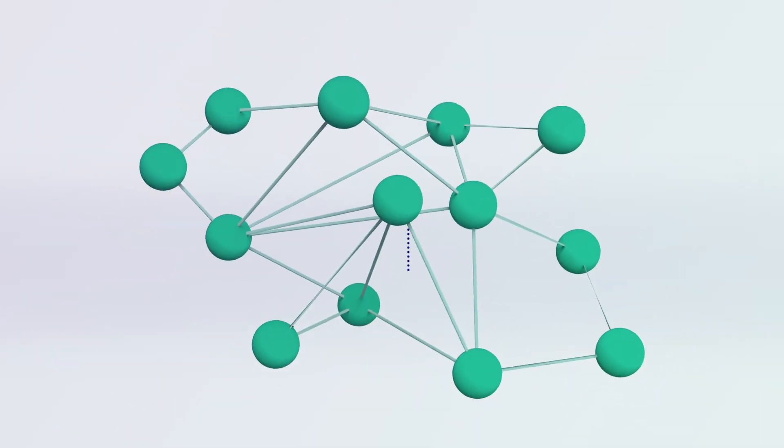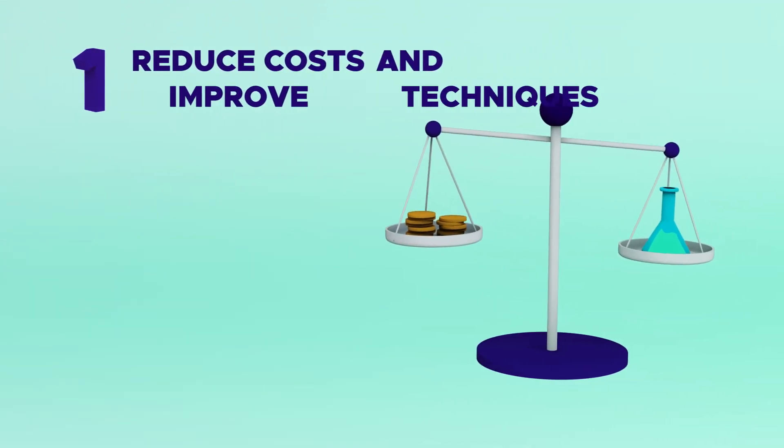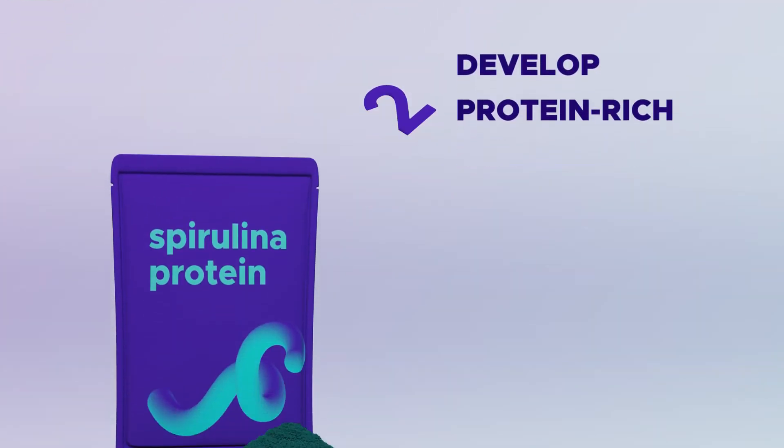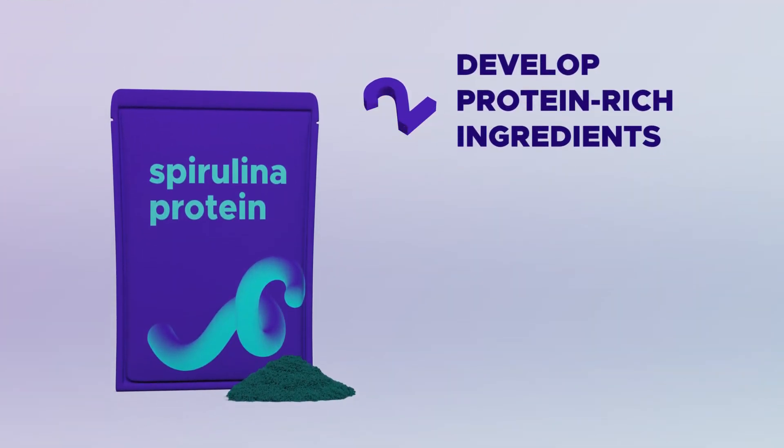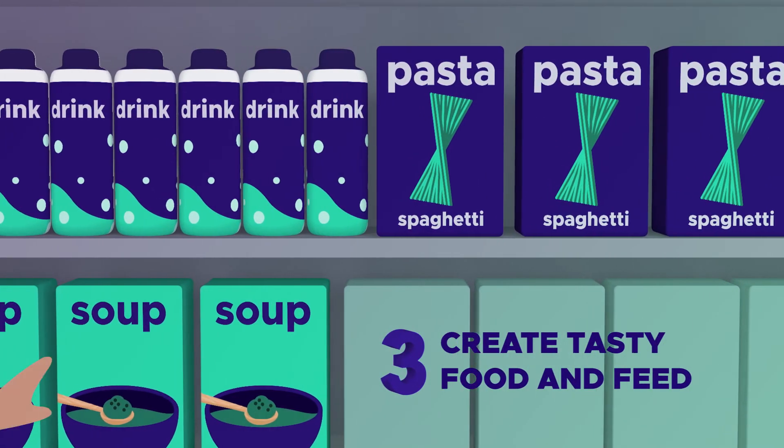That's why ProFuture has teamed up 13 European countries exploring ways to reduce microalgae production costs and improve production techniques, develop competitive new protein-rich ingredients from microalgae, and create tasty and nutritious food products and animal feed.